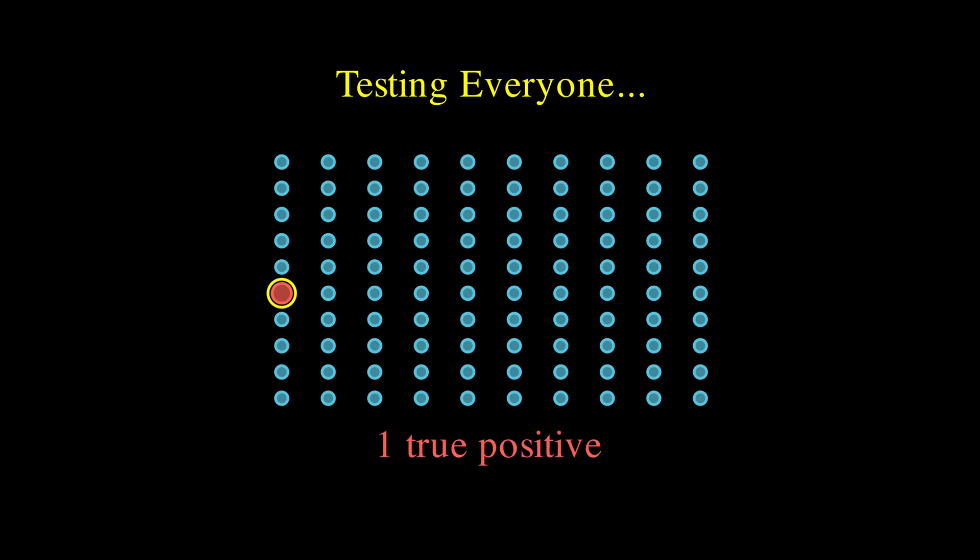But here's the crucial part. When we test those 99 healthy people, the test will incorrectly show positive for about one of them. Because even our 99% accurate test makes mistakes 1% of the time. So now, we have two people with positive test results, one who's actually sick, our true positive, and one who's healthy, but got a false positive.